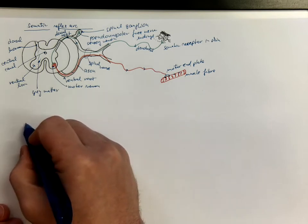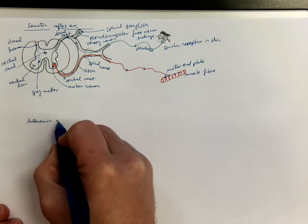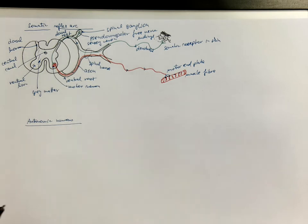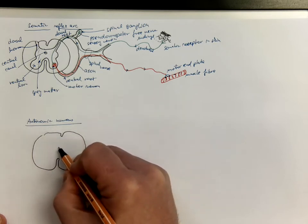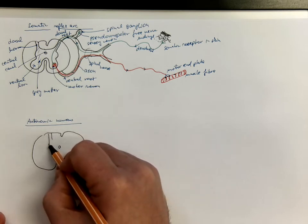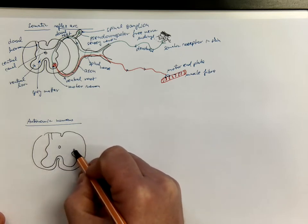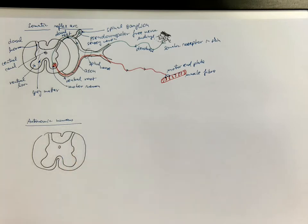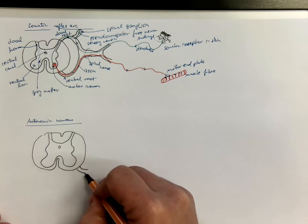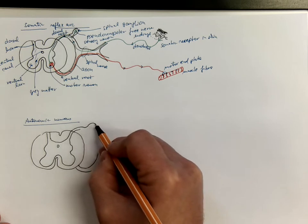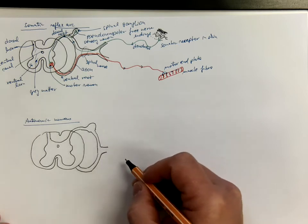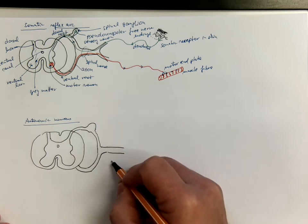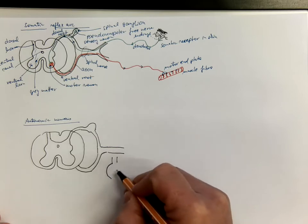Let's have another example with autonomic neurons. Again we start with the spinal cord; in this case we consider the lateral horns, that's where the autonomic neurons reside. And we have again ventral roots, dorsal roots, spinal ganglion, and short spinal nerves. But we need to consider also the sympathetic ganglia of the truncus sympathicus.